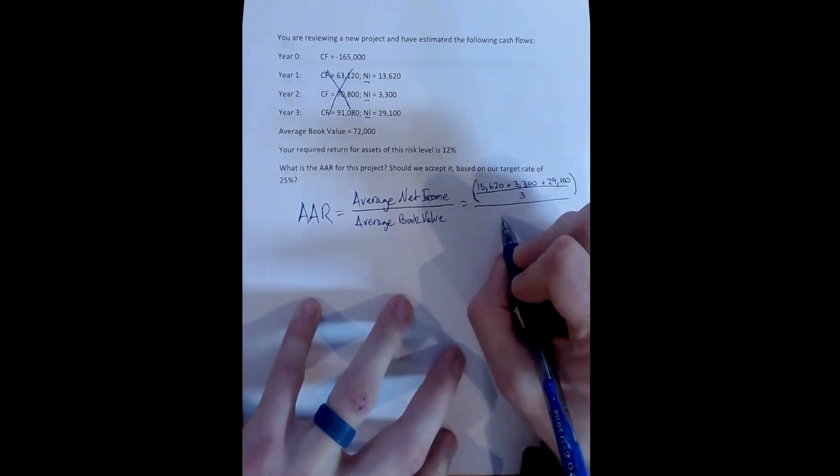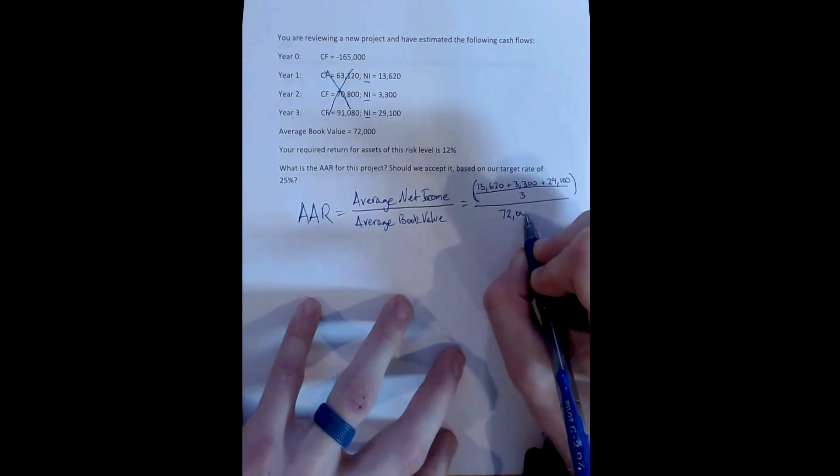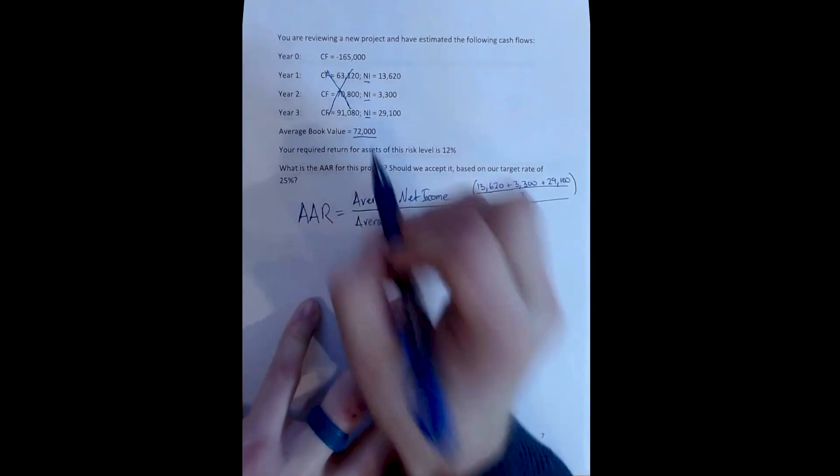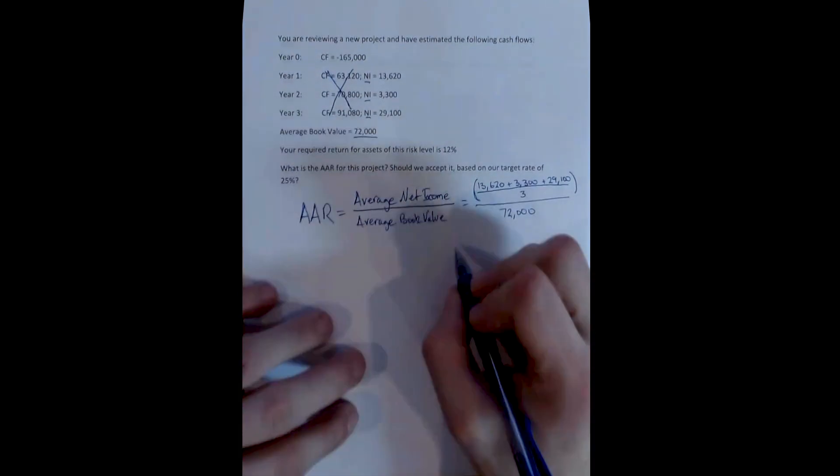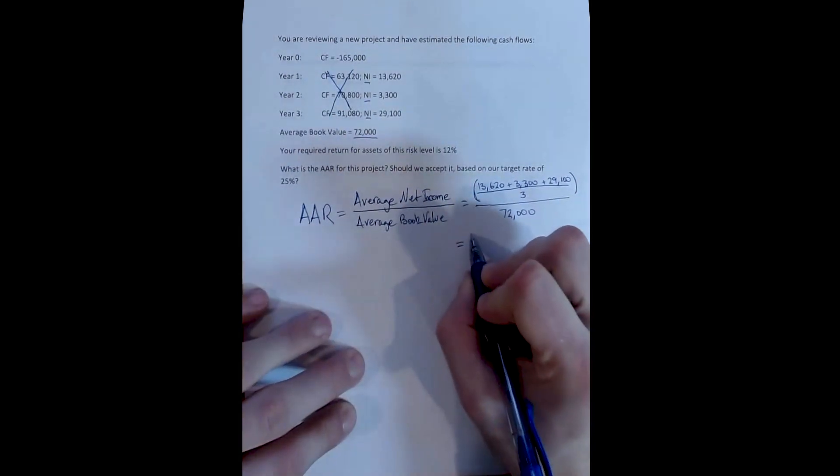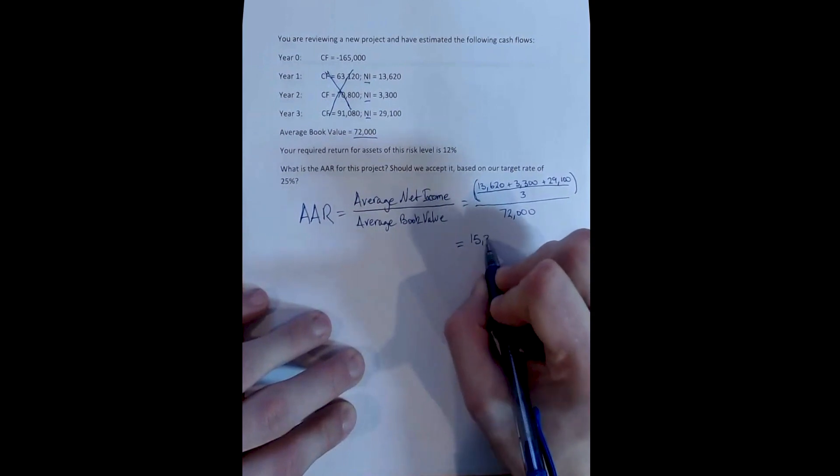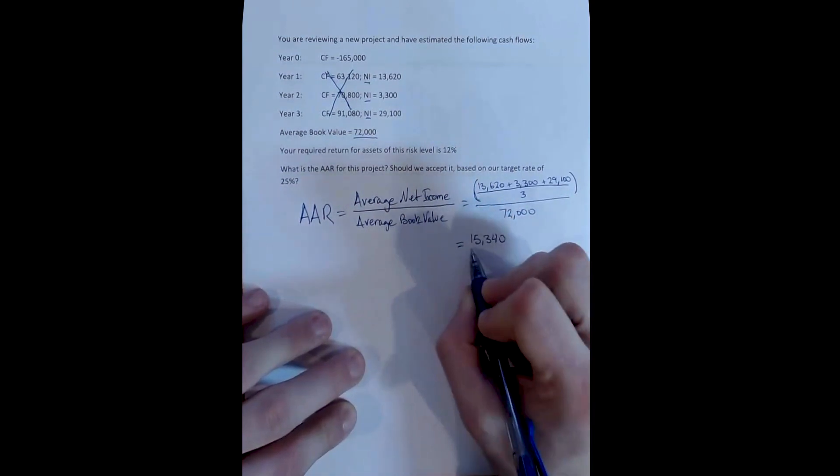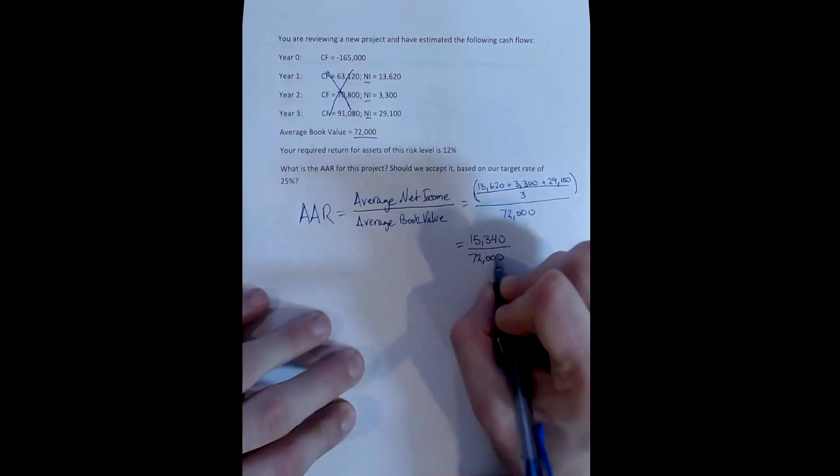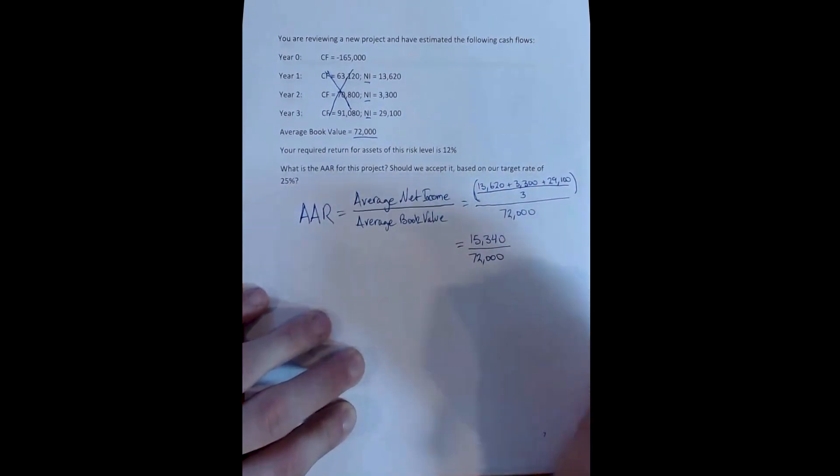All of that will be divided by the average book value of the assets. And here in the problem, I've just given you the average book value of the assets. If we do our algebra correctly, we'll see that the average net income for the project is 15,340 year over year, divided by 72,000, which is the average book value of the assets.